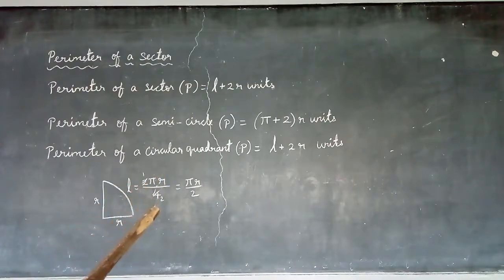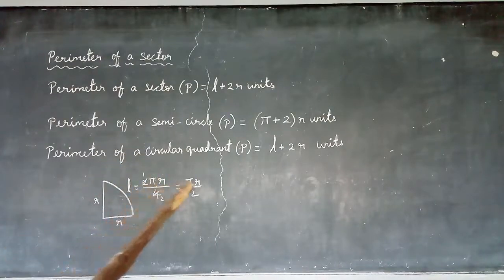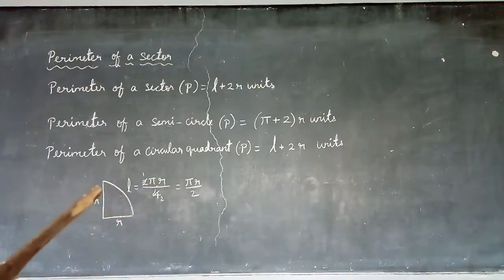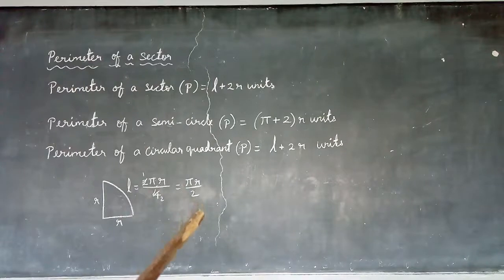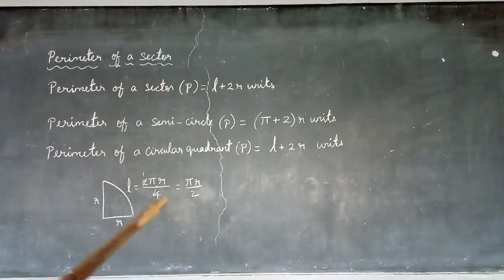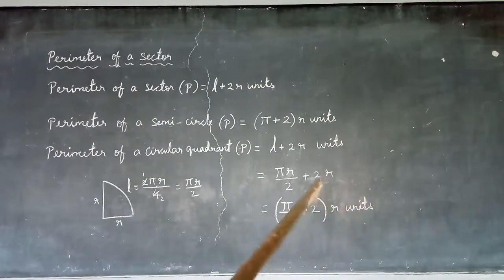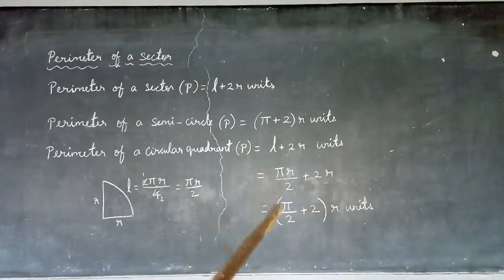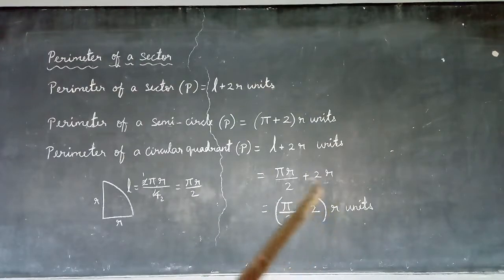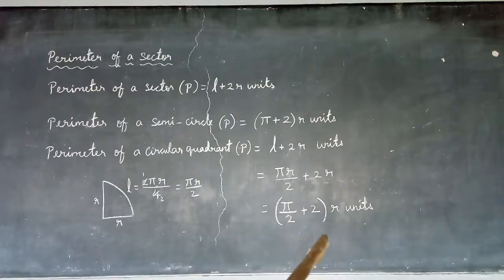Circumference of the circle divided by 4: 2πR divided by 4 — the 2 cancels with 4 leaving 2 in the denominator — so the length of the quadrant arc is πR by 2. Taking R as common, the perimeter equals R(π/2 + 2) units. This is the perimeter of a circular quadrant.